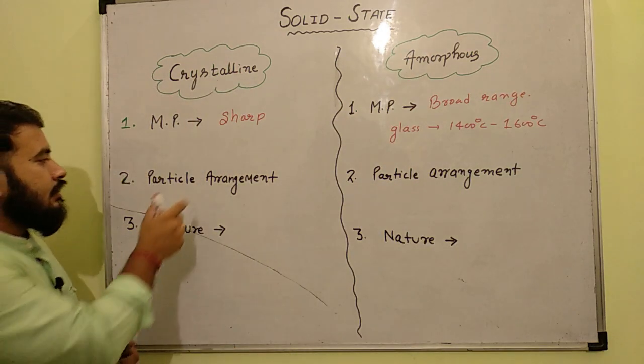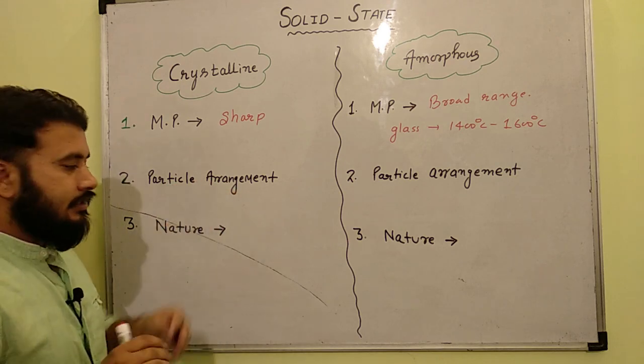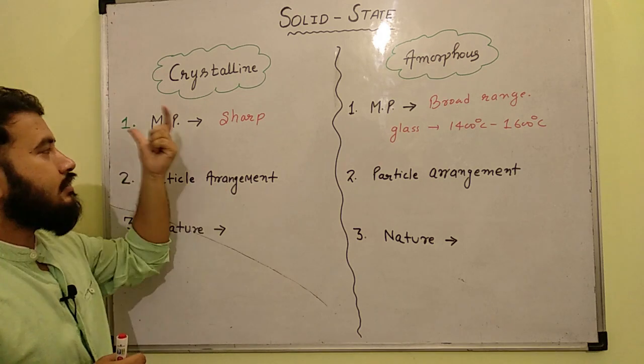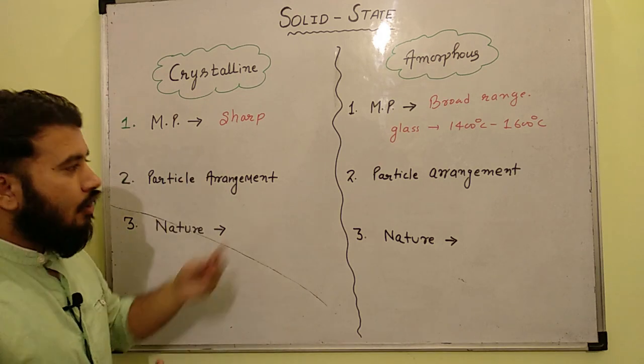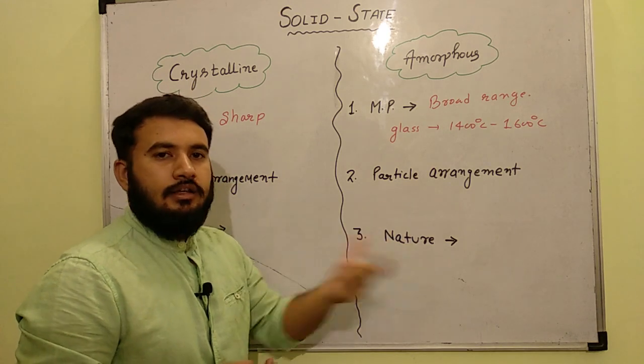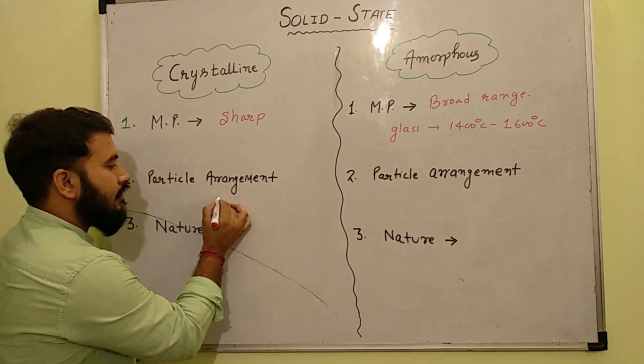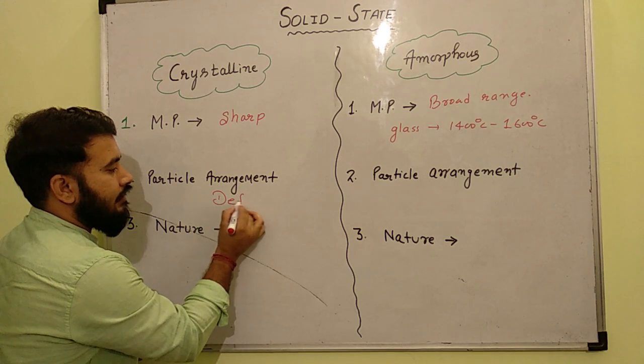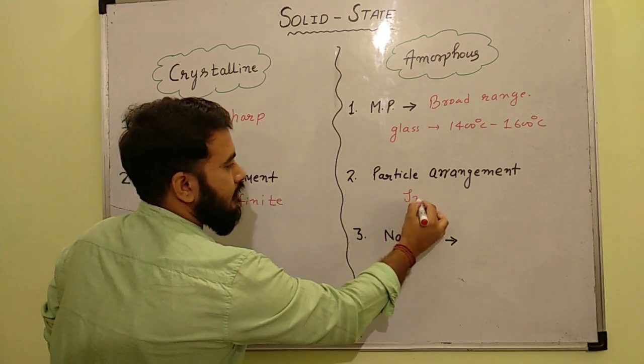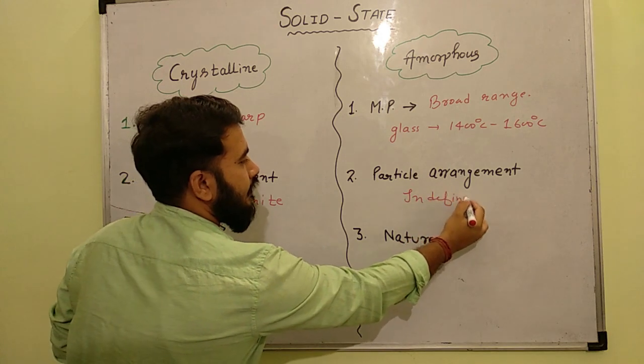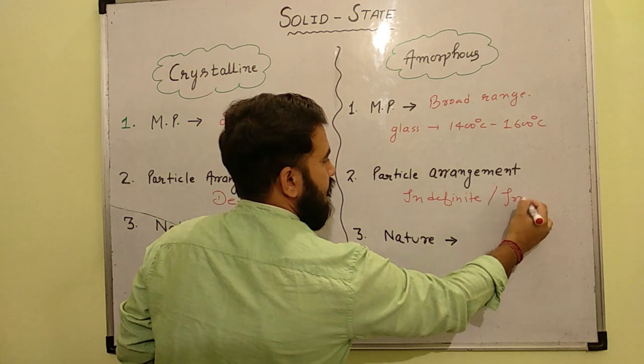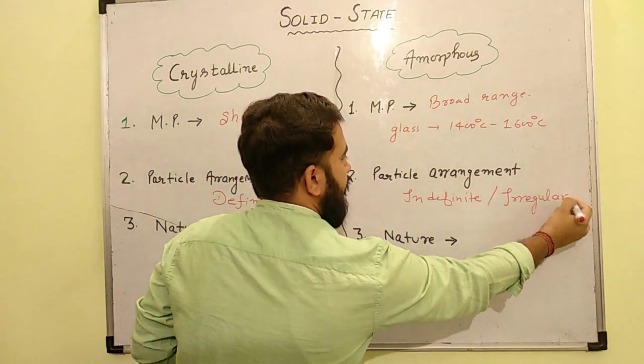Now second point is particle arrangement, like we have discussed earlier that the particle arrangement is definite and the amorphous solid pattern is irregular. So here the particle arrangement is definite. So irregular arrangement.